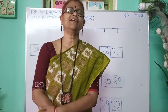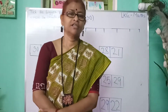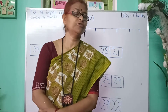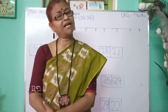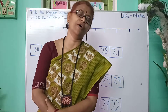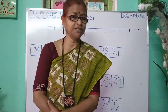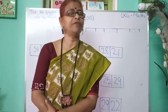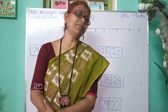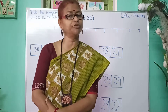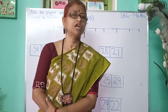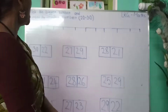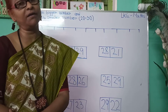Good morning children. Today we are going to learn to find out the bigger number and smaller number from 20 to 30. We have already learned to find out the bigger number and smaller number from 1 to 20. Today's topic is: tick the bigger number and cross the smaller number.